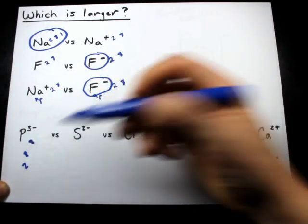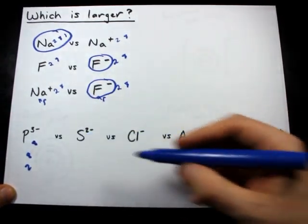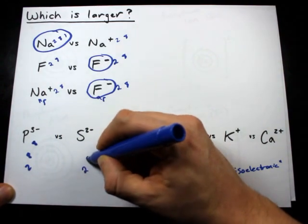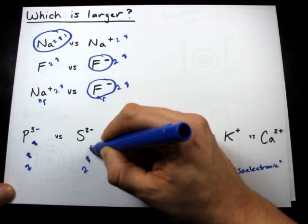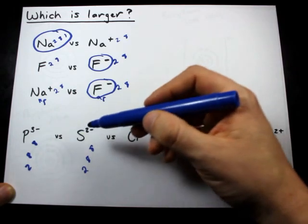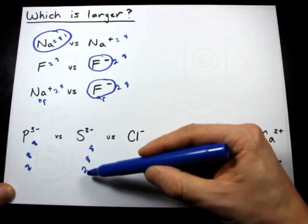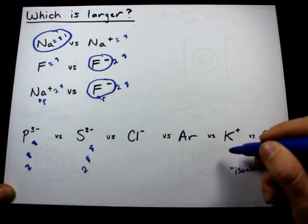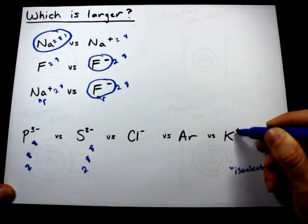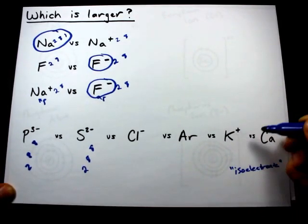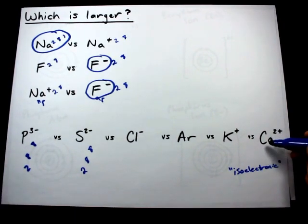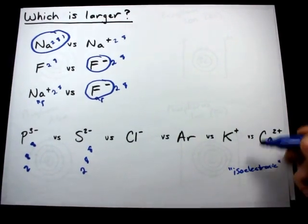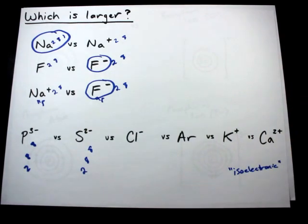Sulfur is too short of a third shell, so S2 minus electron configuration is 2, 8, 8. Chlorine also 2, 8, 8. Chlorine is 2, 8, 7 naturally, but you gain one electron so it's 2, 8, 8. And calcium is 2, 8, 8, 2, but you lose the outer 2, so it's 2, 8, 8. They're all the exact same electron configuration.